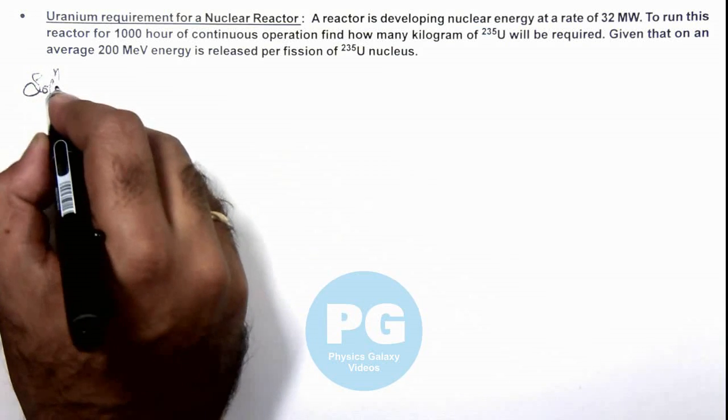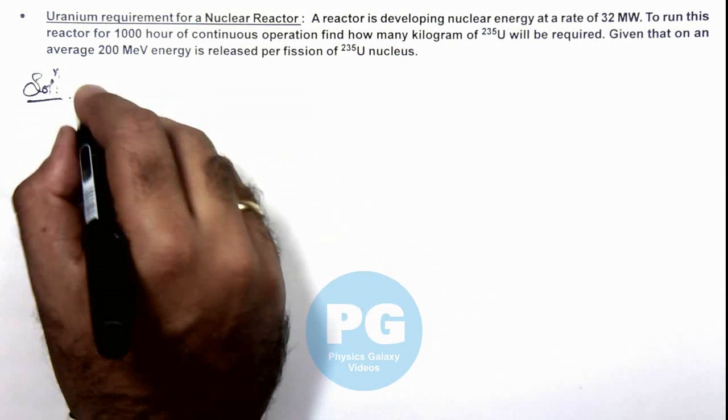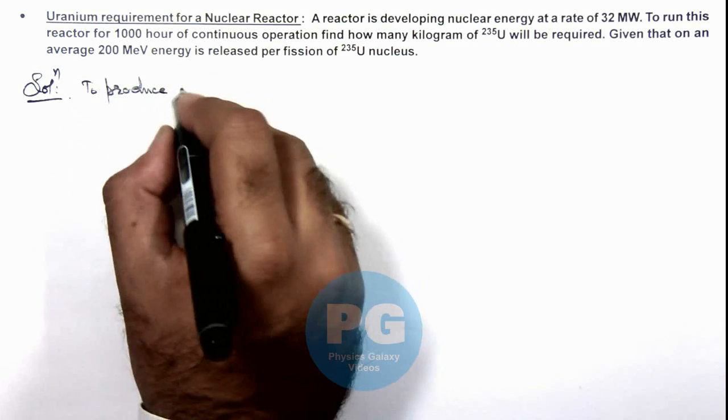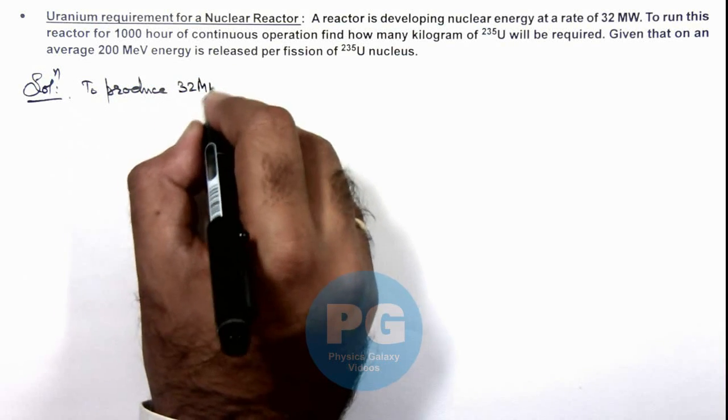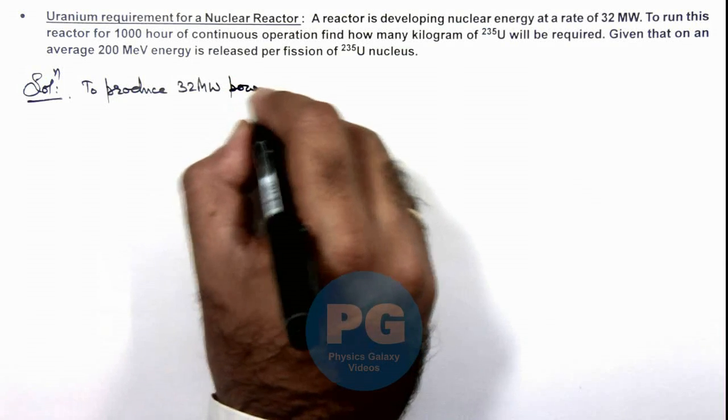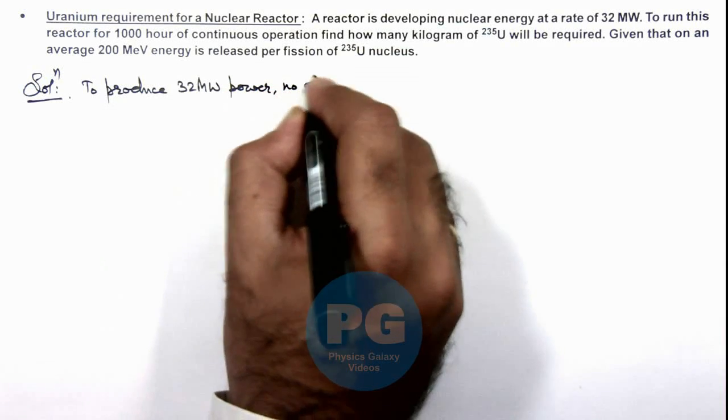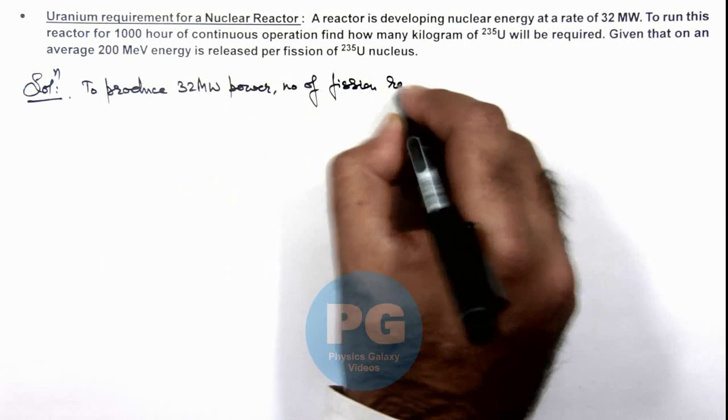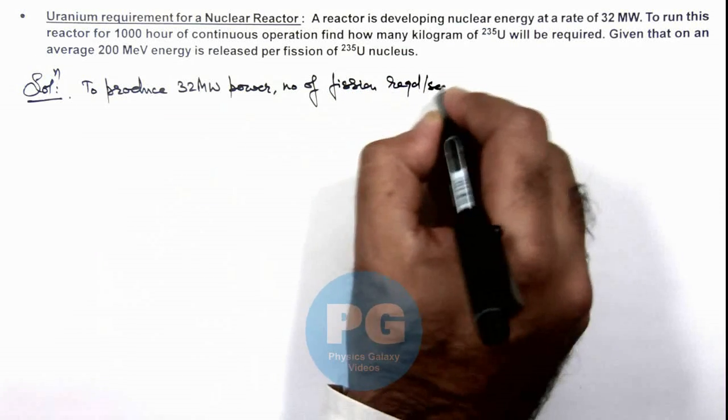Now in this solution, we can write: to produce 32 megawatt power, number of fissions required per second are...